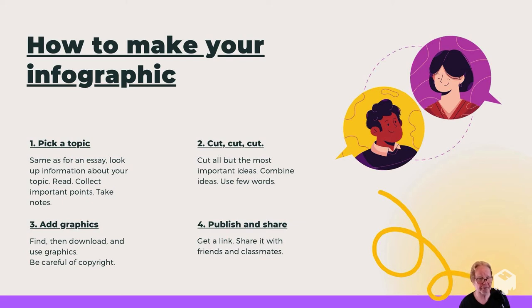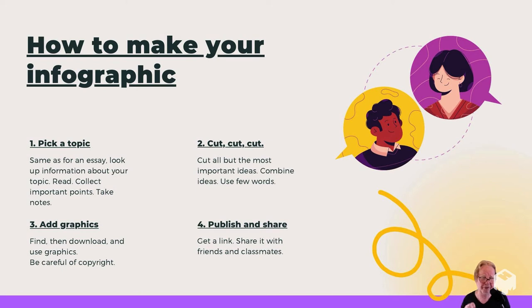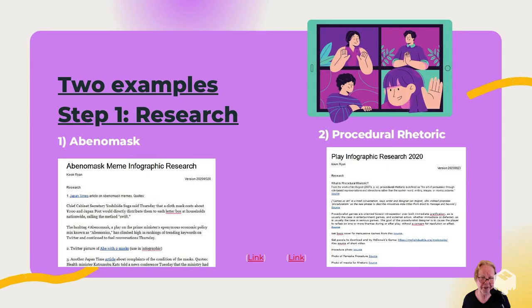I just want to explain. There are four steps to make a good infographic. The first one is to pick a topic and do research. You have to read and collect important points and take notes — it's the same as for an essay. Number two is to cut. You have to cut many of the words from the research down to the minimum. And then add graphics. And finally, publish and share.